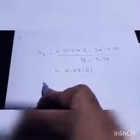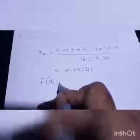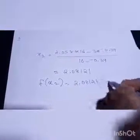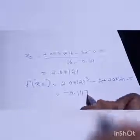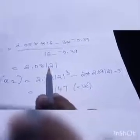So substituting the values in the given equation, we will get f(x2) is equal to 2.08121 cube minus 2 into 2.08121 minus 5. And you will get negative 0.147, that is also again a negative value. So here we write x as 2.08121 and f(x) as negative 0.147.